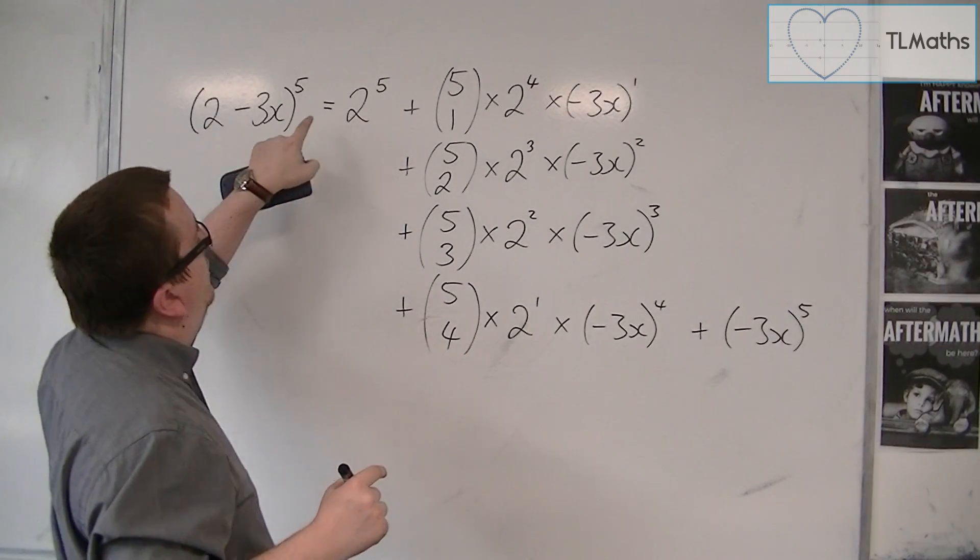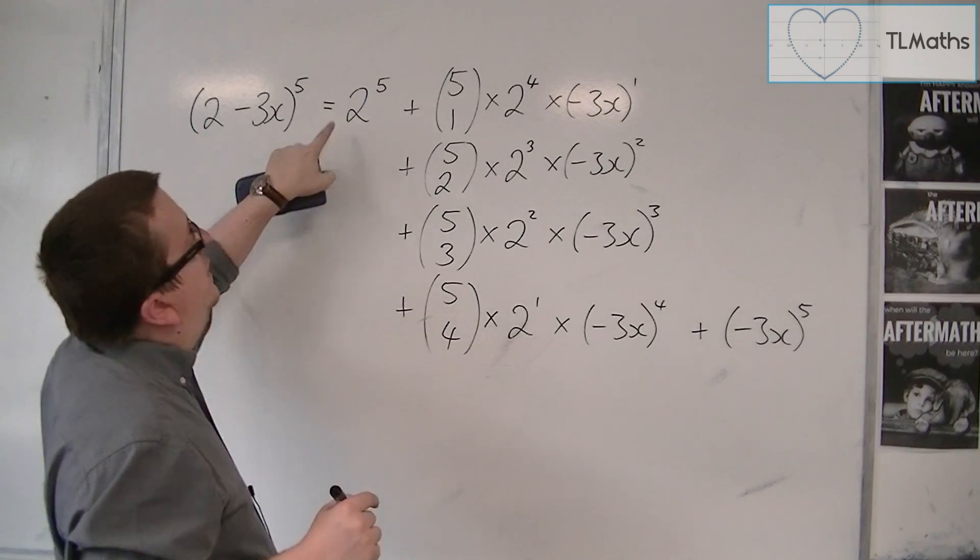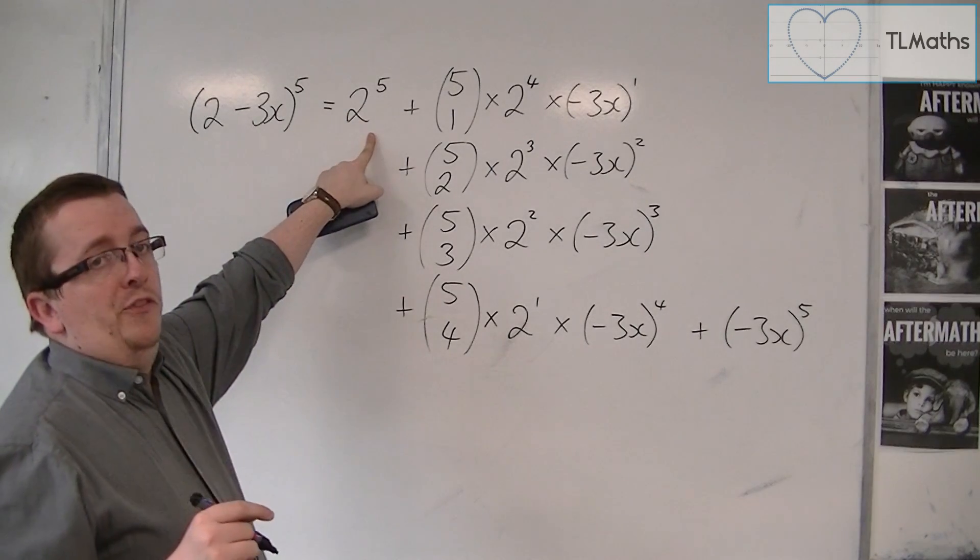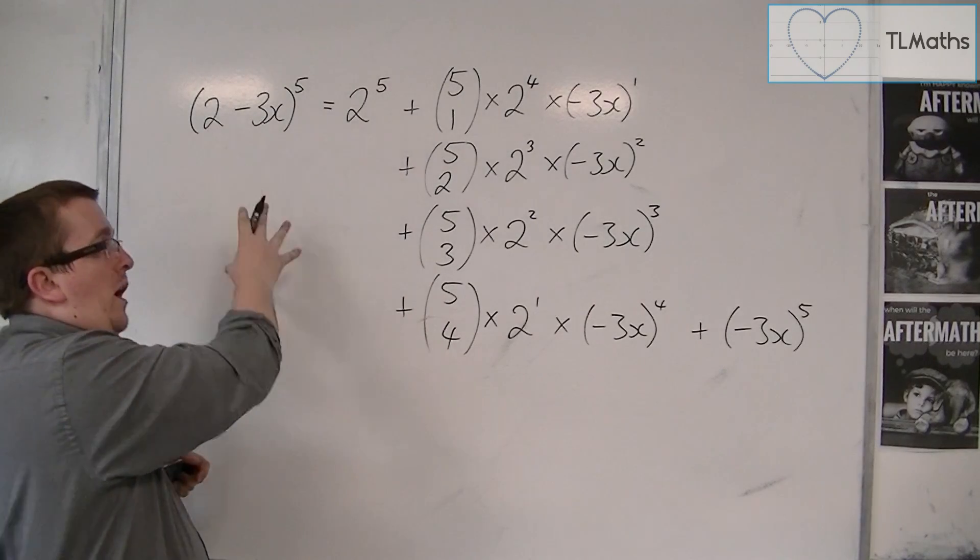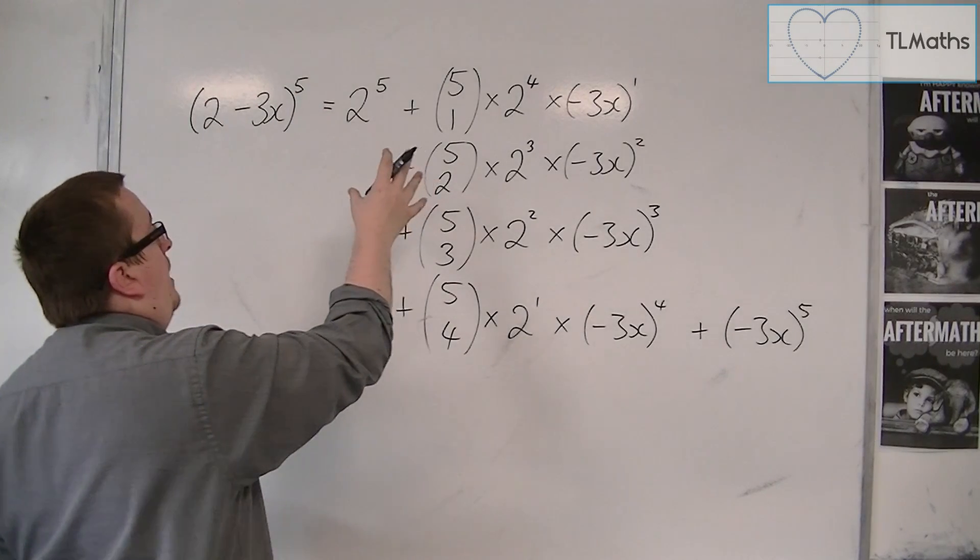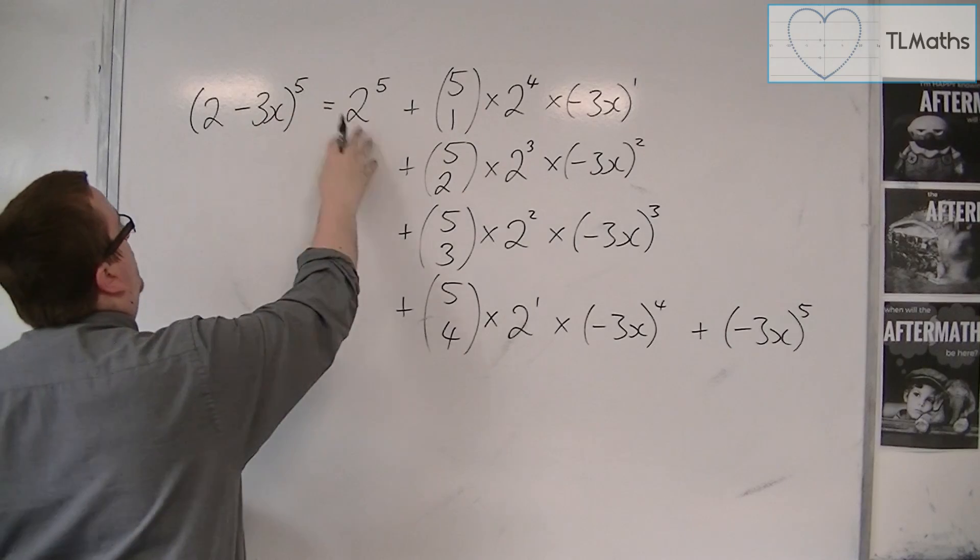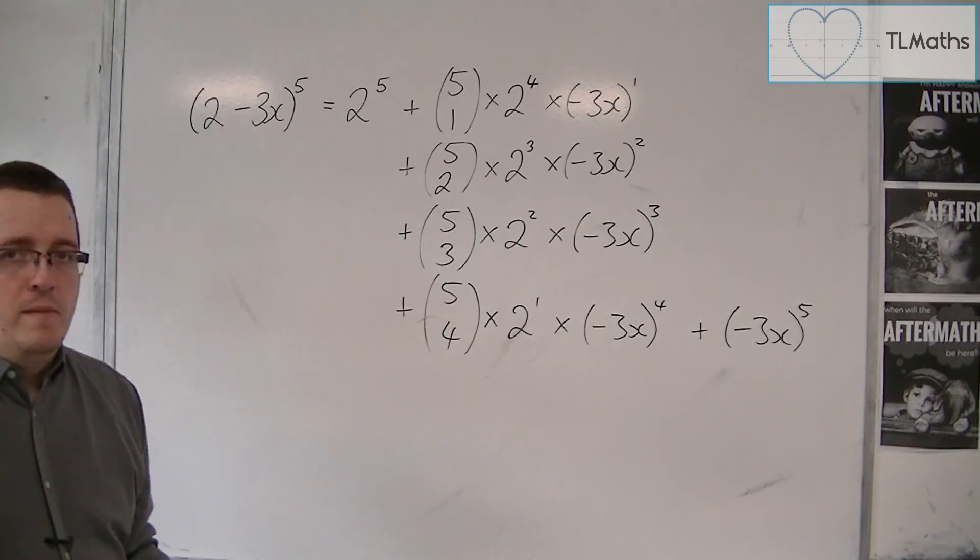That's 5 choose 0 times 2 to the 5 times minus 3x to the power of 0. So the 5 choose 0 is 1, the minus 3x to the power of 0 is 1, and you're just left with that 2 to the 5, so there's no point in me writing it.